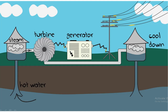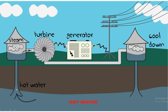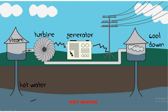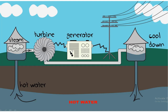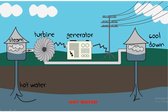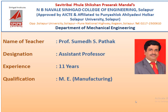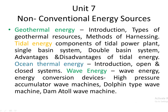Looking at the first slide, there is an animation where hot water from underground is entered through a well into a chamber. This hot water gets converted into steam, which helps rotate the turbine. As the turbine rotates, a generator connected to it produces electricity, which is passed to households or industries. The topic we are going to learn from this video is different types of non-conventional energy sources — geothermal energy, tidal energy, ocean thermal energy, and wave energy.